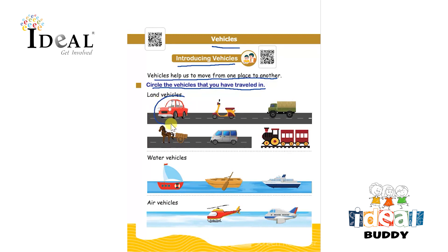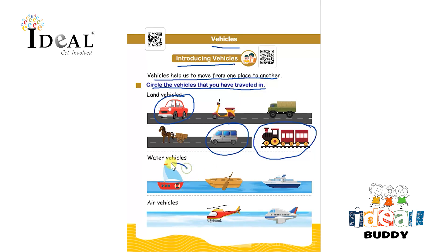Say for example, car. Over here these are the land vehicles, so please emphasize the child to read that as well. Then the water vehicles — these are the water vehicles. So they have to encircle those vehicles in which they have traveled in.